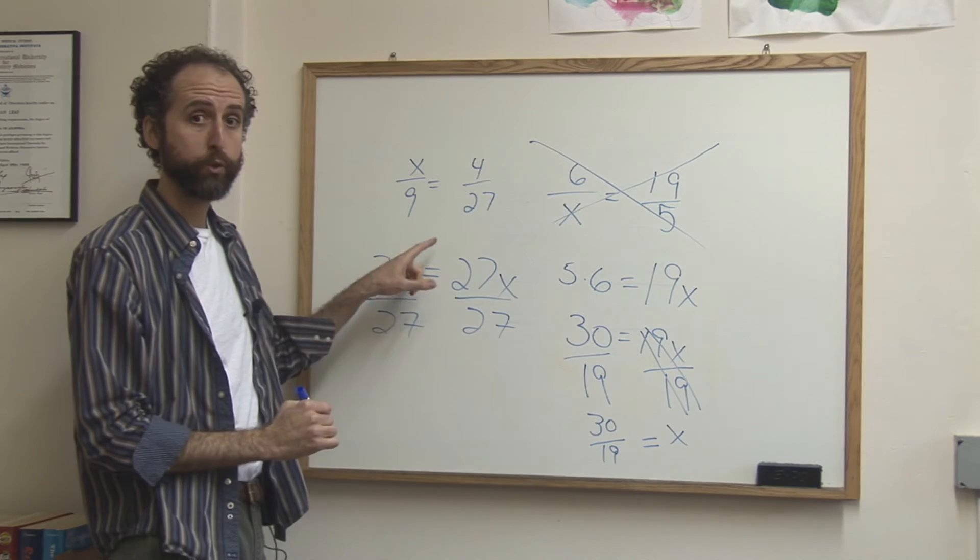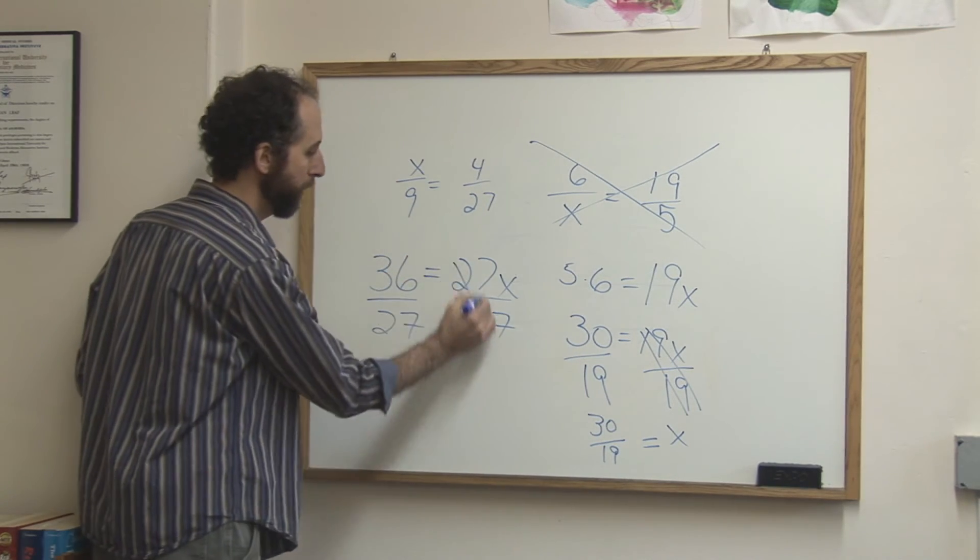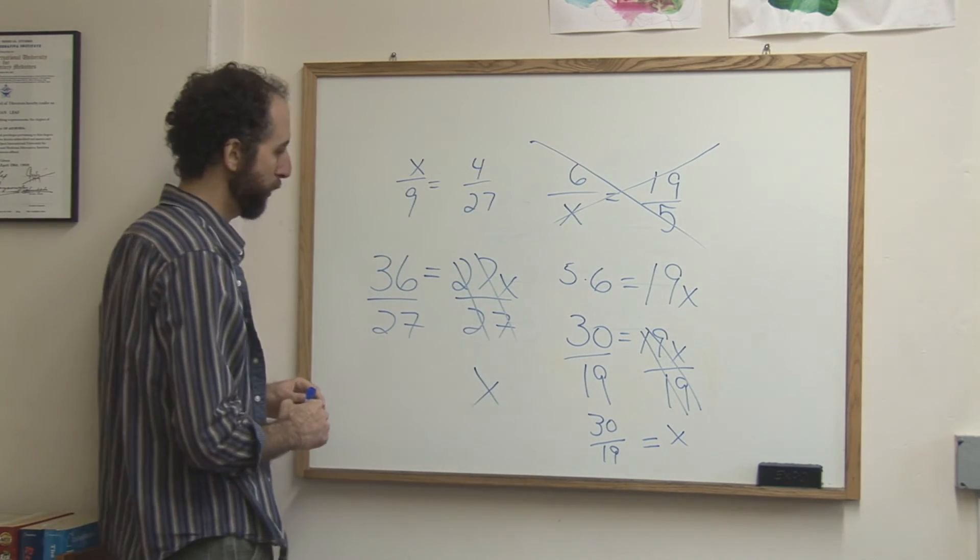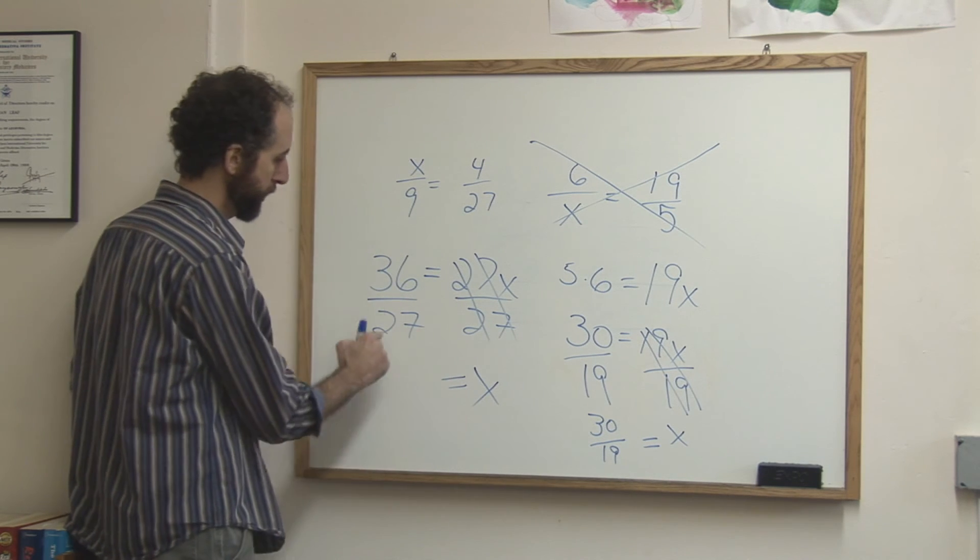The reason we do that is because 27 over 27 cancels out, giving you x alone, which is why we did it, equals 36 over 27.